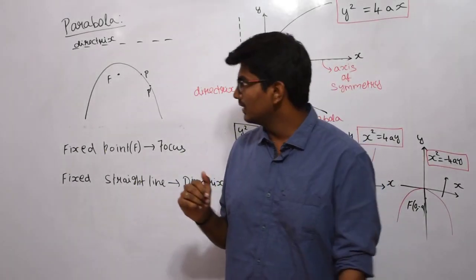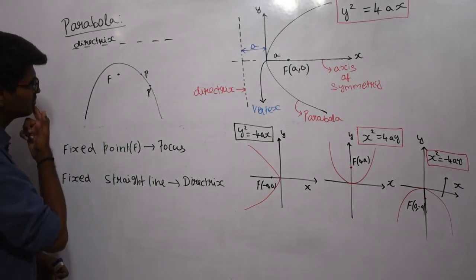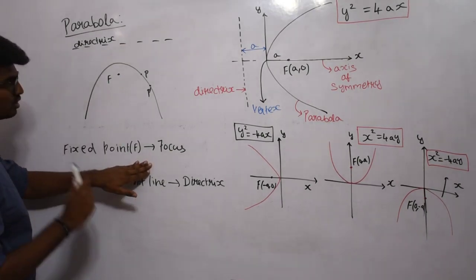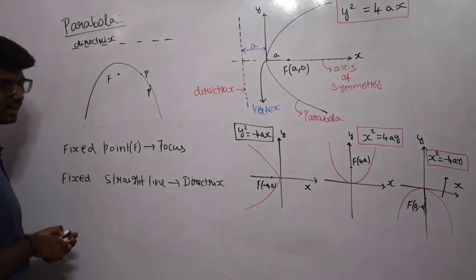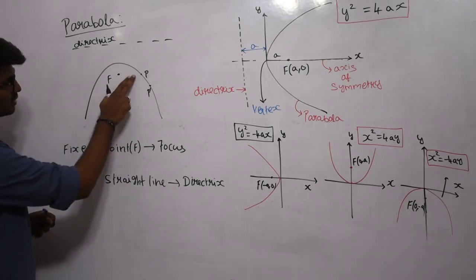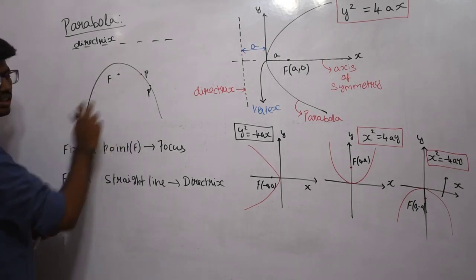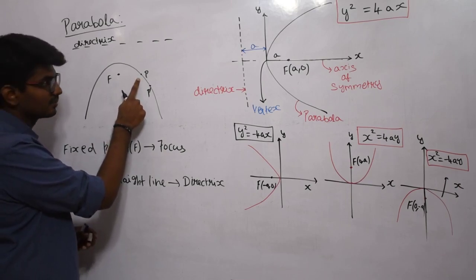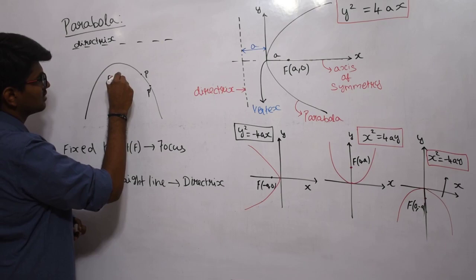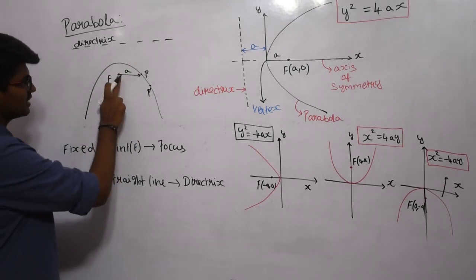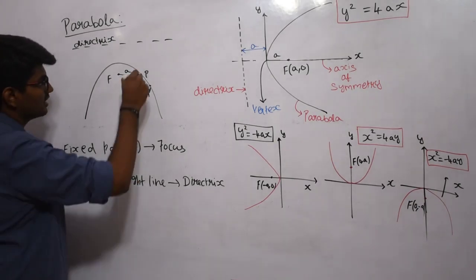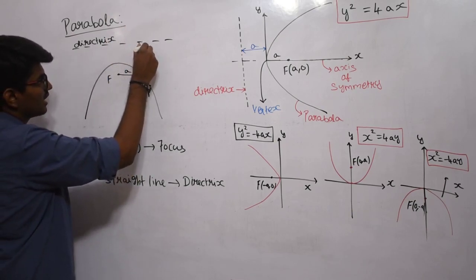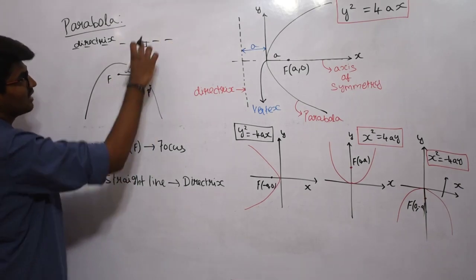Our next curve is parabola. Parabola is also a simple type of curve. The definition of parabola: there will be a fixed point called the focus, and there should be a fixed line called the directrix. If I choose any point in the curve, the distance from the focus to that point should be the same as the distance measured from that point to the directrix, and this line should be perpendicular to the directrix.